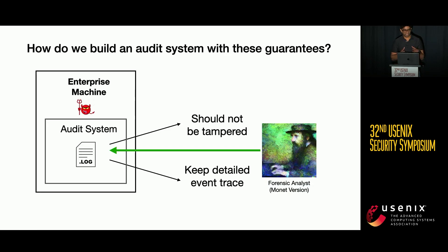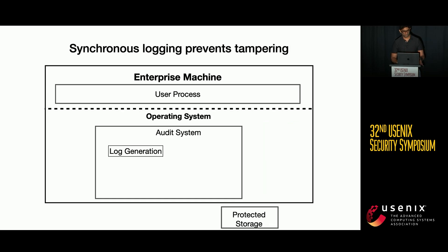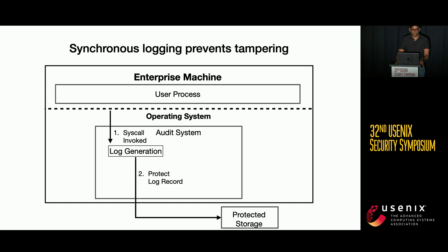So based on the limitations of existing audit systems, how do we build a practical audit system with guarantees of tamper prevention and detailed event tracing while also achieving manageable performance overhead? To prevent any logs from being tampered, the system needs to guarantee that every log record is protected before the event is executed — the audit system generates the record and writes it to protected storage before executing the system call. However, synchronous writes to an IO device can incur significant performance overhead, so designing an efficient mechanism to achieve this property is extremely important.